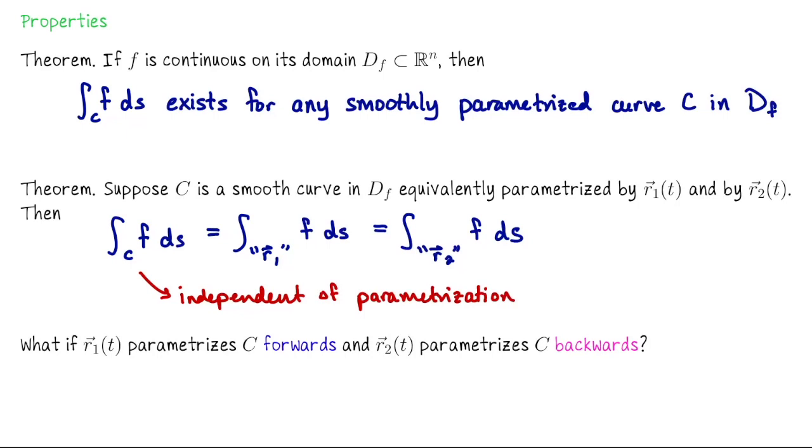I didn't even specify that we parametrize this curve going in the same direction, and that's because it actually doesn't even matter. Suppose you and I describe the same curve but my description travels one way along the curve and your description goes the other way. It actually doesn't matter.